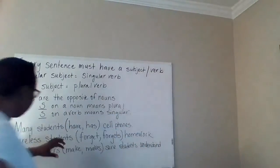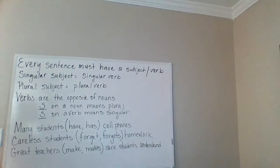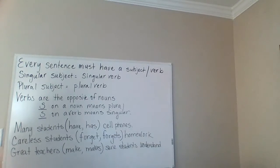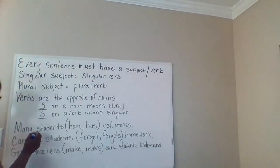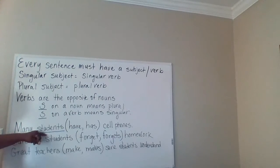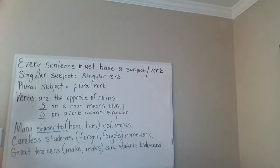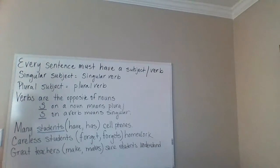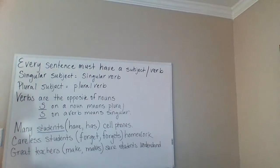Let's look at the first example: 'Many students have or has cell phones.' The first thing you need to do is decide what your subject is. If we look at this sentence, we know that it's discussing the students. Student is a noun, and if we have an S on students, we know that students is plural. So if the noun is plural, the verb must be plural.